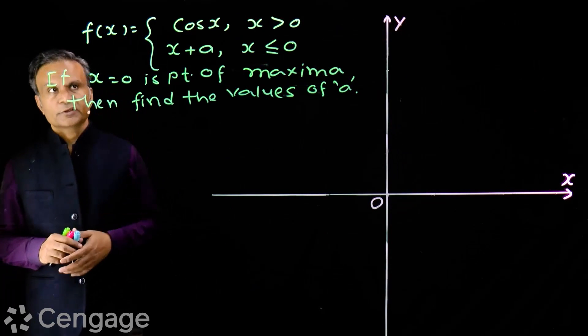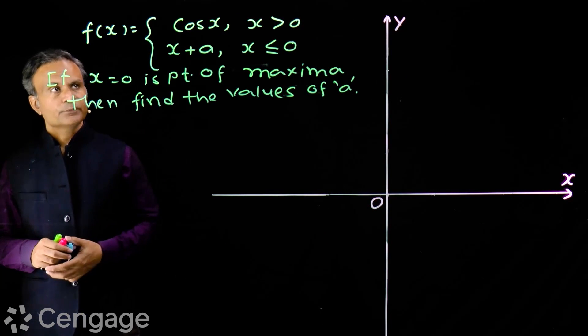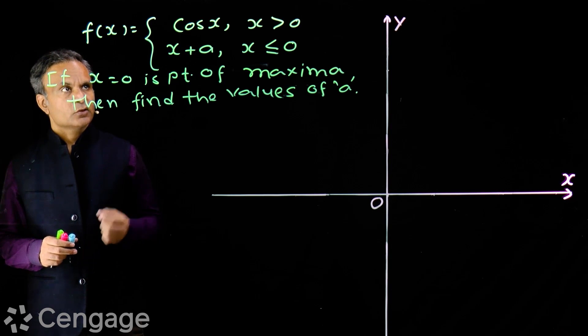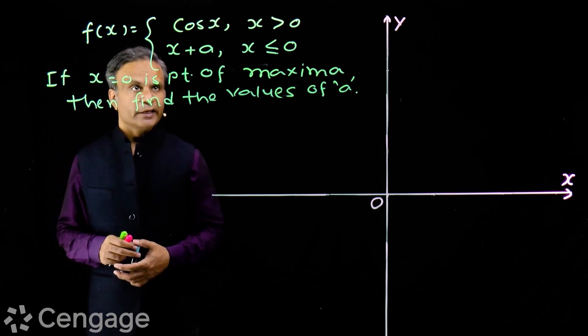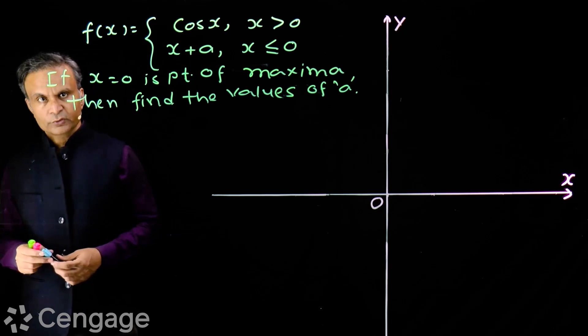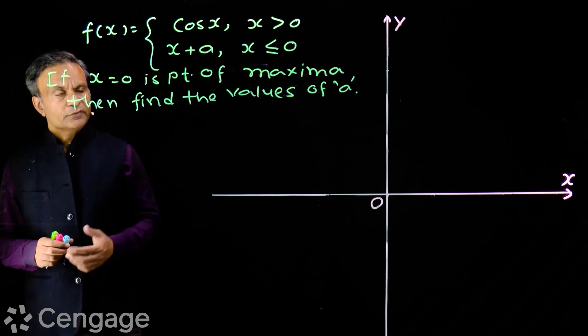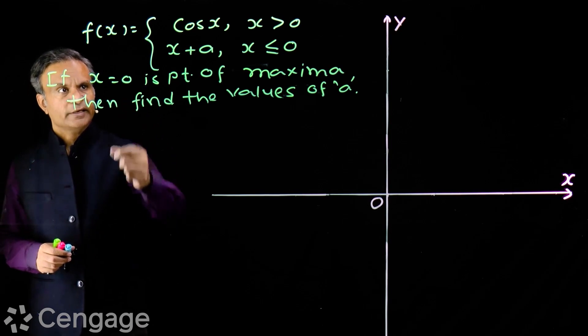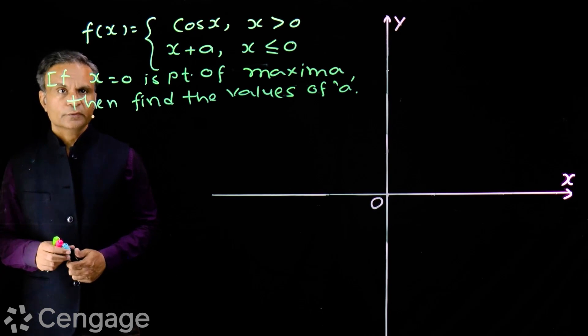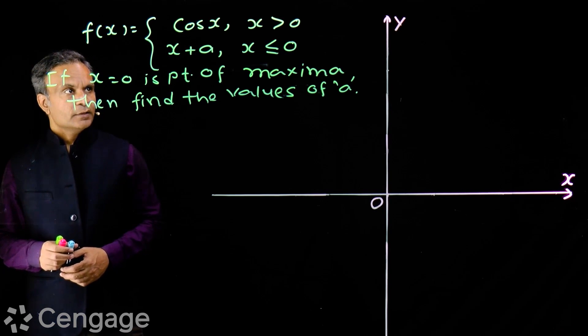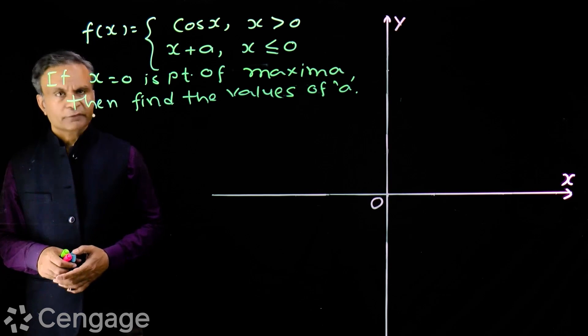We have one more question here. We have piecewise definition of function. Function is cos x for x more than 0 and x plus a for x less than or equal to 0. Now, if this function has point of maxima at x equals 0, then we have to find the values of a. Now, this time, let us use a graphical approach.